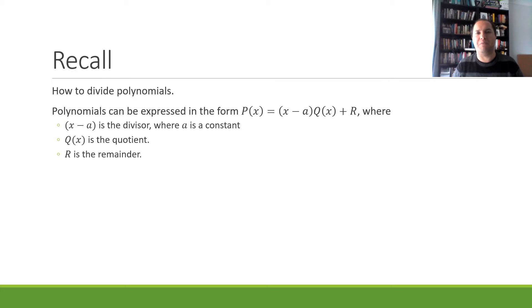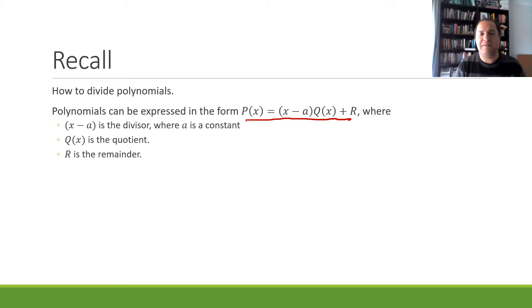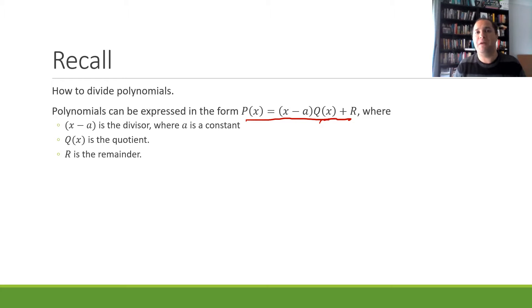Things to remember: we're relying on what we've done in previous lessons regarding polynomial division, and in particular this result that says p(x) can be expressed as our linear divisor (x minus a) times our quotient function q, plus our remainder at the end. We're going to be using that form when discussing the remainder theorem.